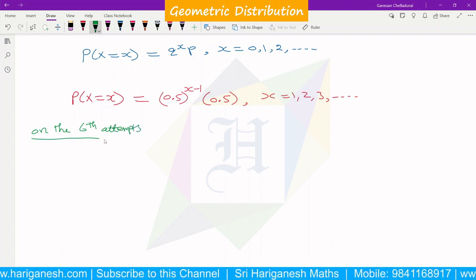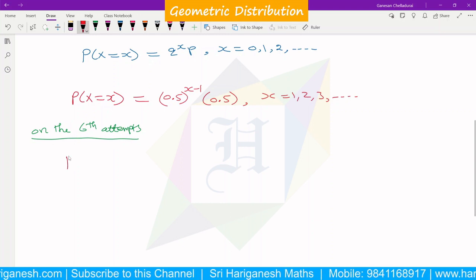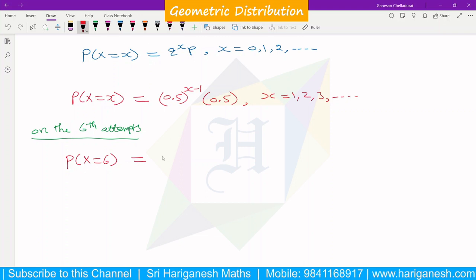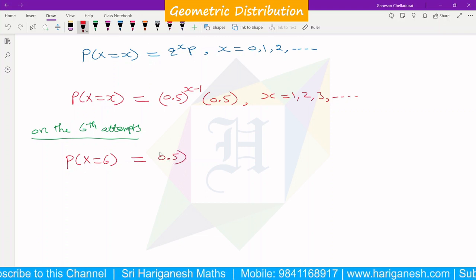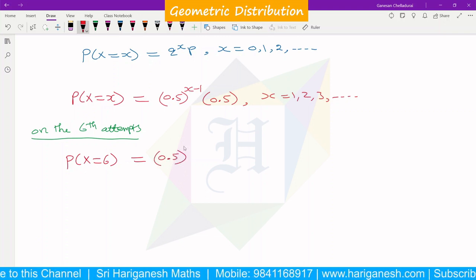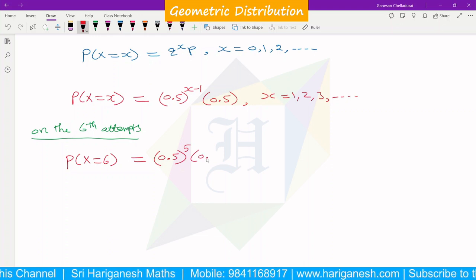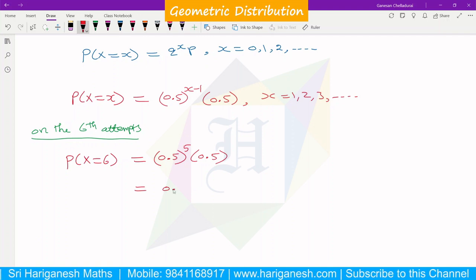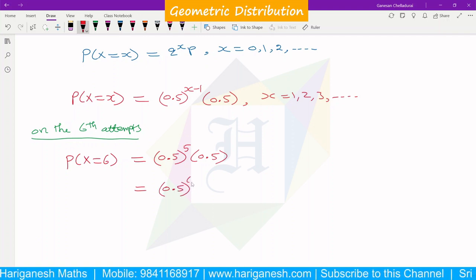Now for the sixth attempt, P(X=6). The x value is 6, so 0.5^(6-1) which is 0.5^5, times 0.5. This is 0.5^6.